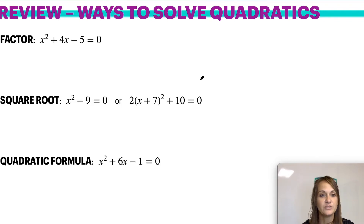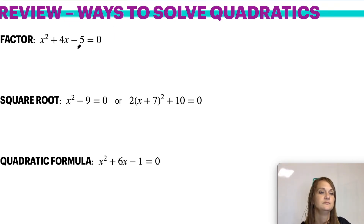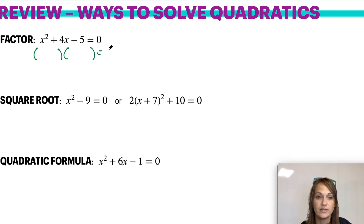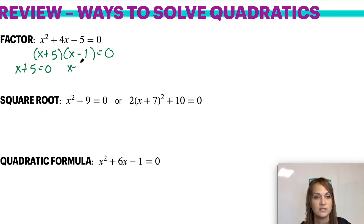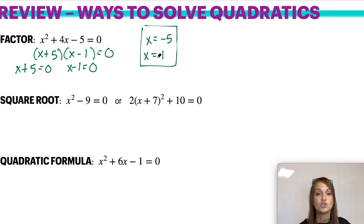Now, review. Pause the video and work through these problems solving for x using the different methods, then resume to see how I've solved it. The first way you can factor is by doing two parentheses. What multiplies to give you negative 5 and adds to give you 4? The answer is a positive 5 and a negative 1. You're solving for 0, so you need to set each factor equal to 0. You'll get x equals negative 5, and x equals positive 1 — the two places this graph crosses the x-axis.